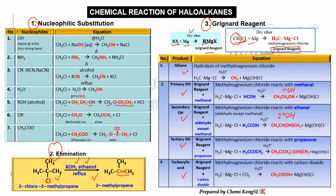When the Grignard reagent reacts with a ketone — for example, propanone — it forms a tertiary alcohol. The last case is when the Grignard reagent reacts with carbon dioxide (CO2); it forms a carboxylic acid (COOH).